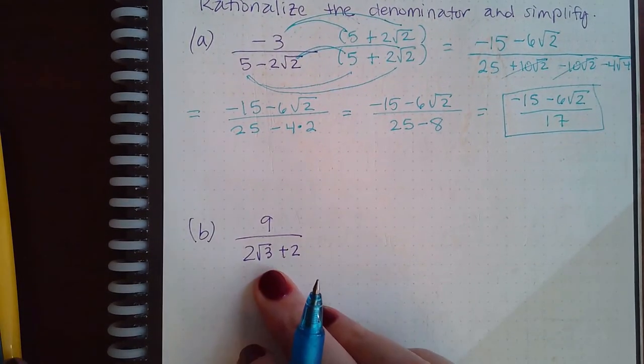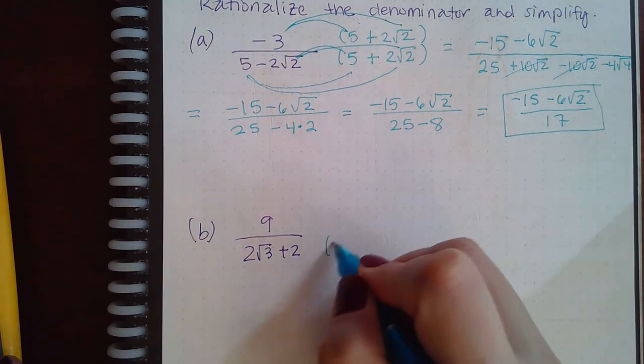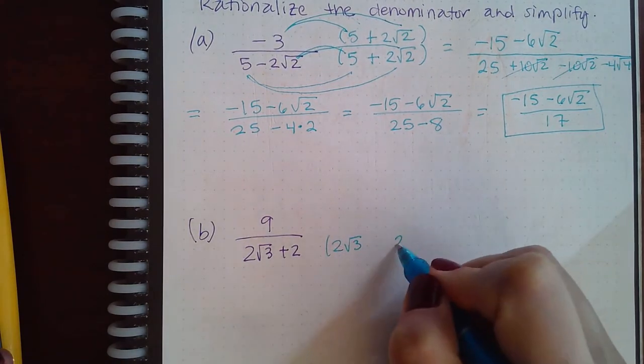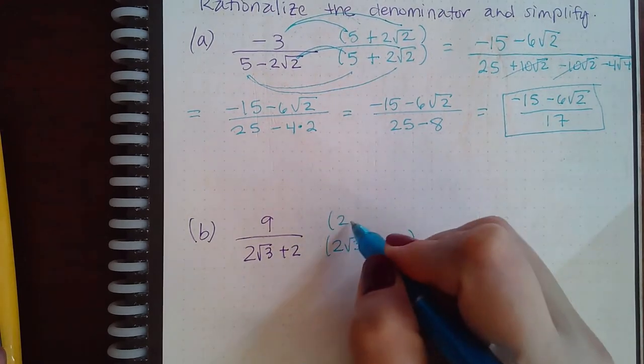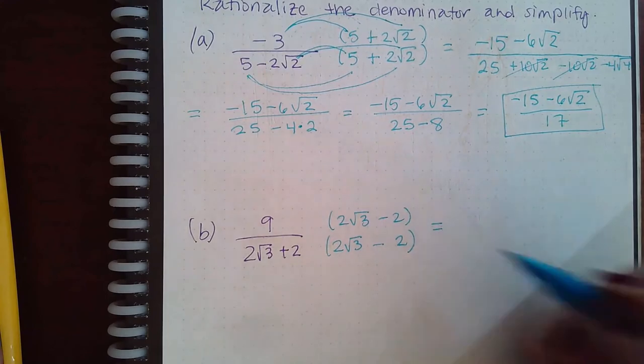Same thing for this. If I have a plus sign in the middle, it's the same. I'm going to take the first term the same, the second term the same, and then change the plus to a minus. Whatever I do to the bottom, I have to do the exact same thing to the top.